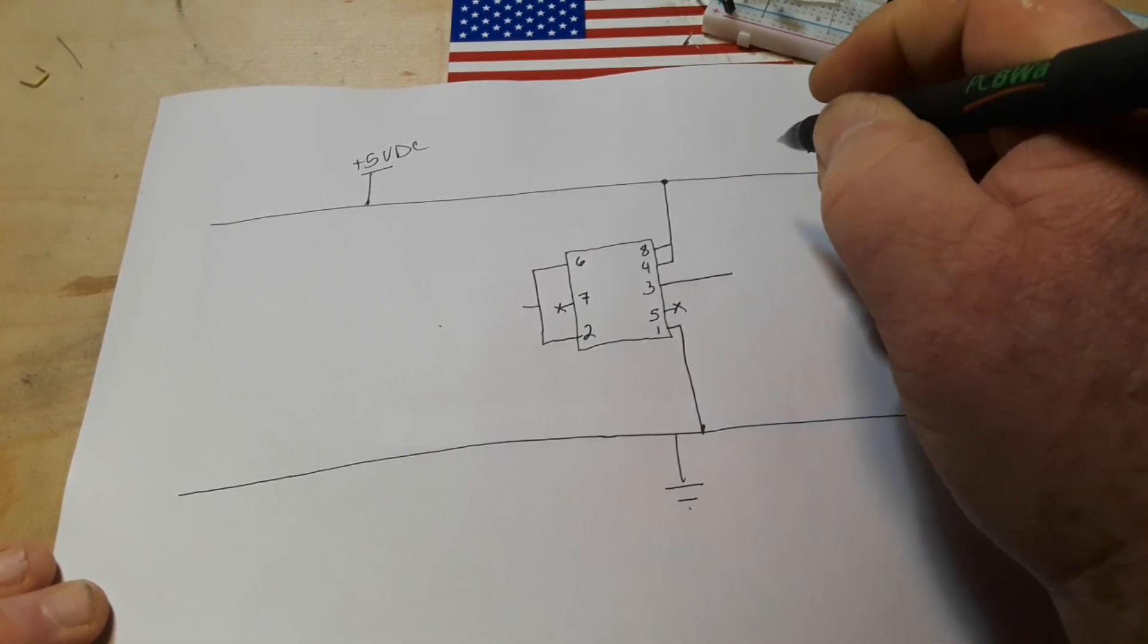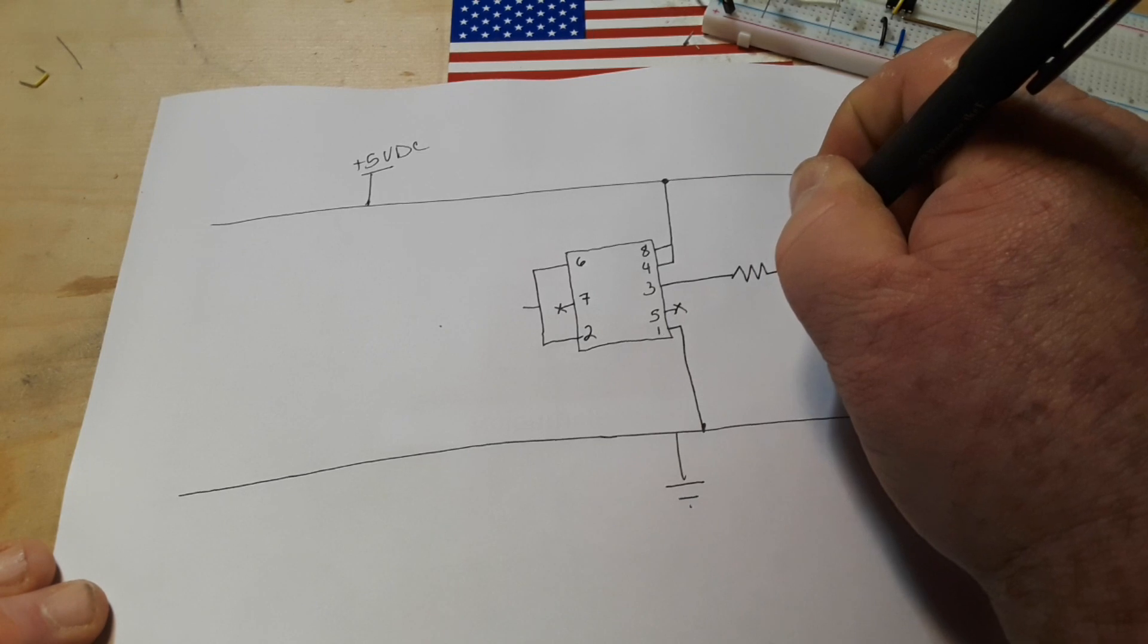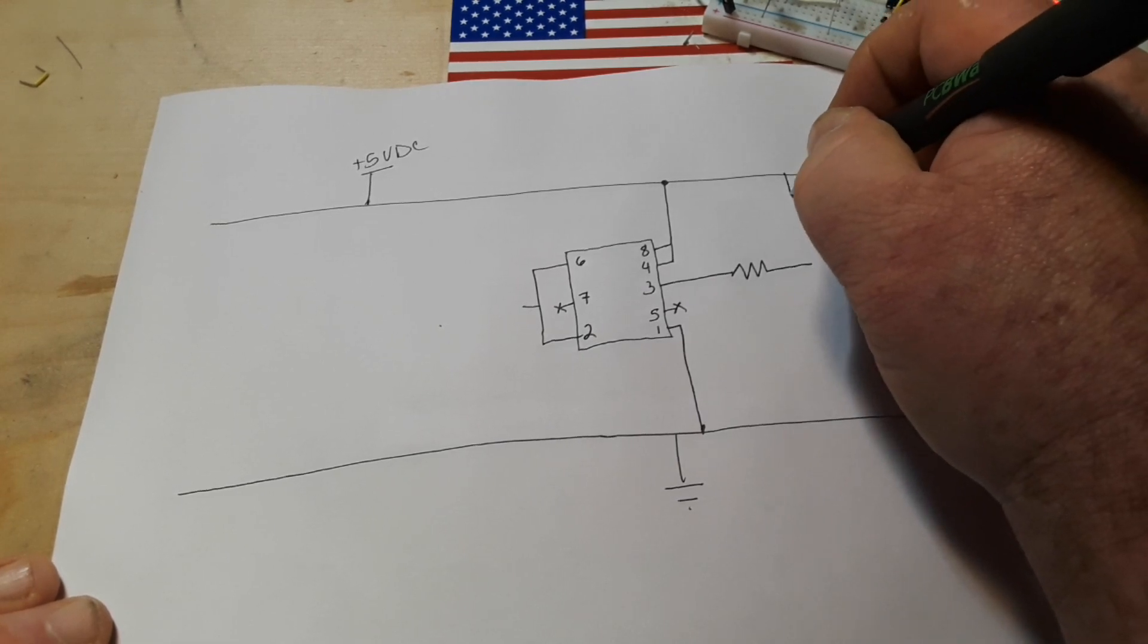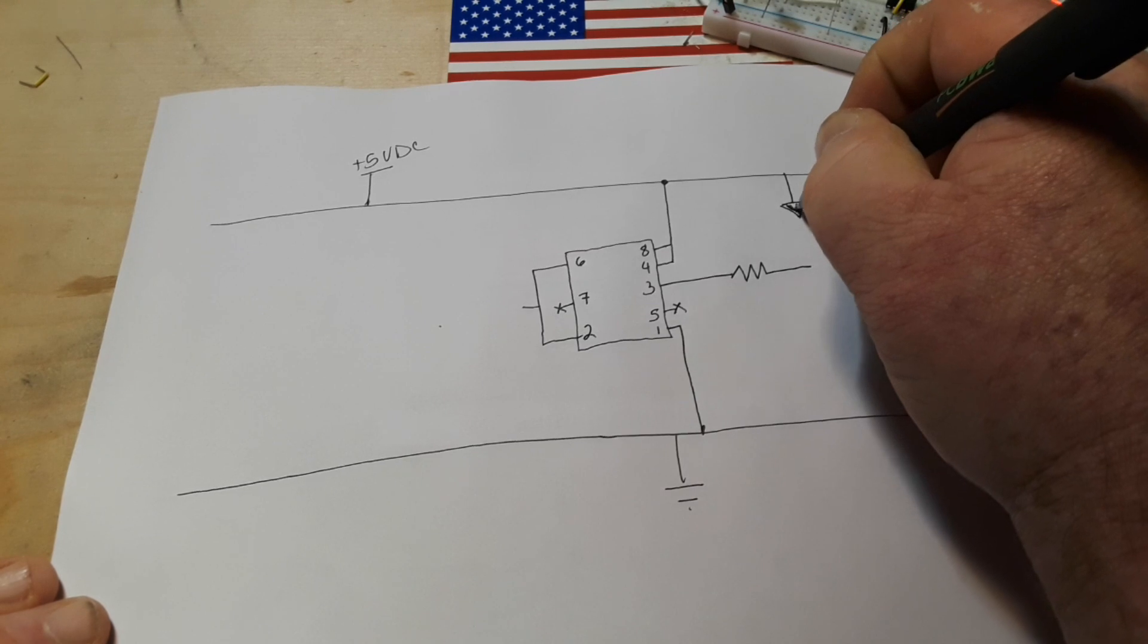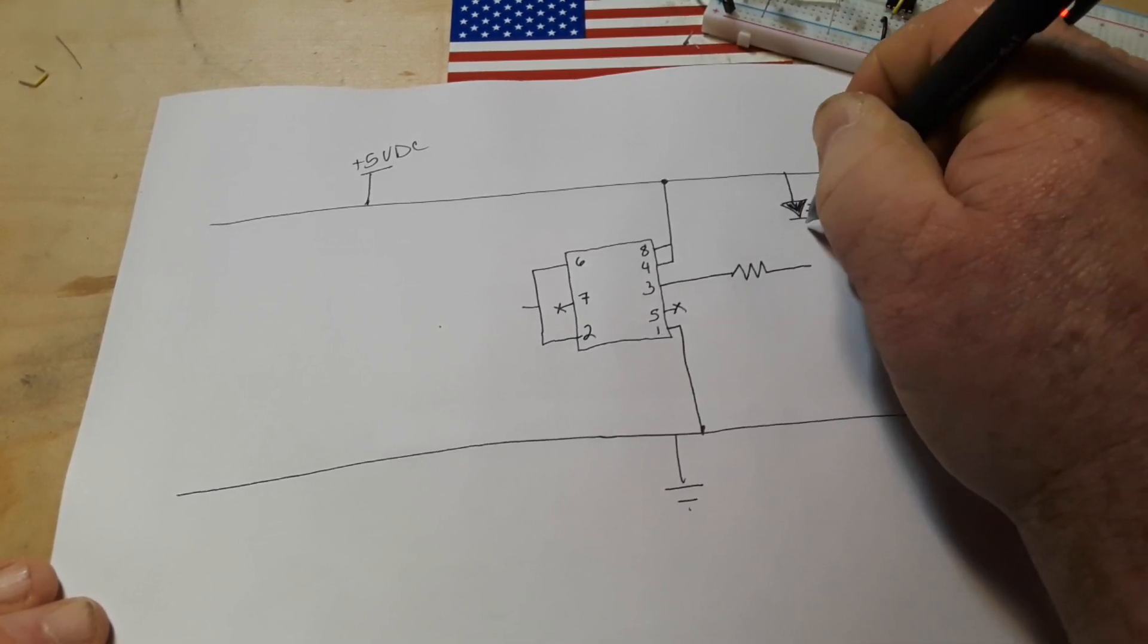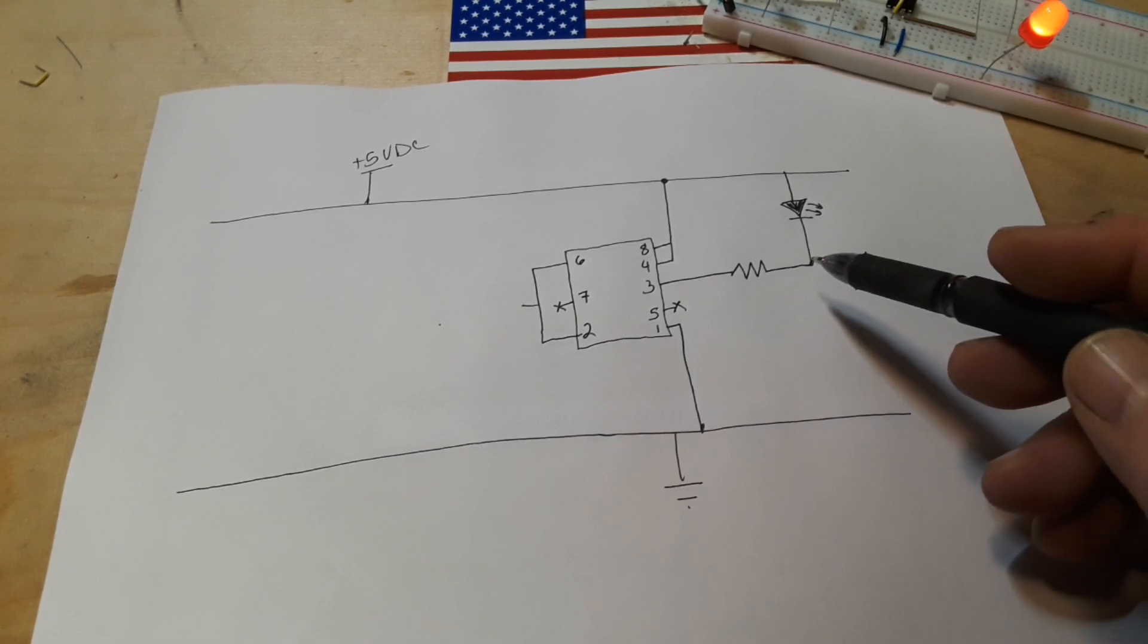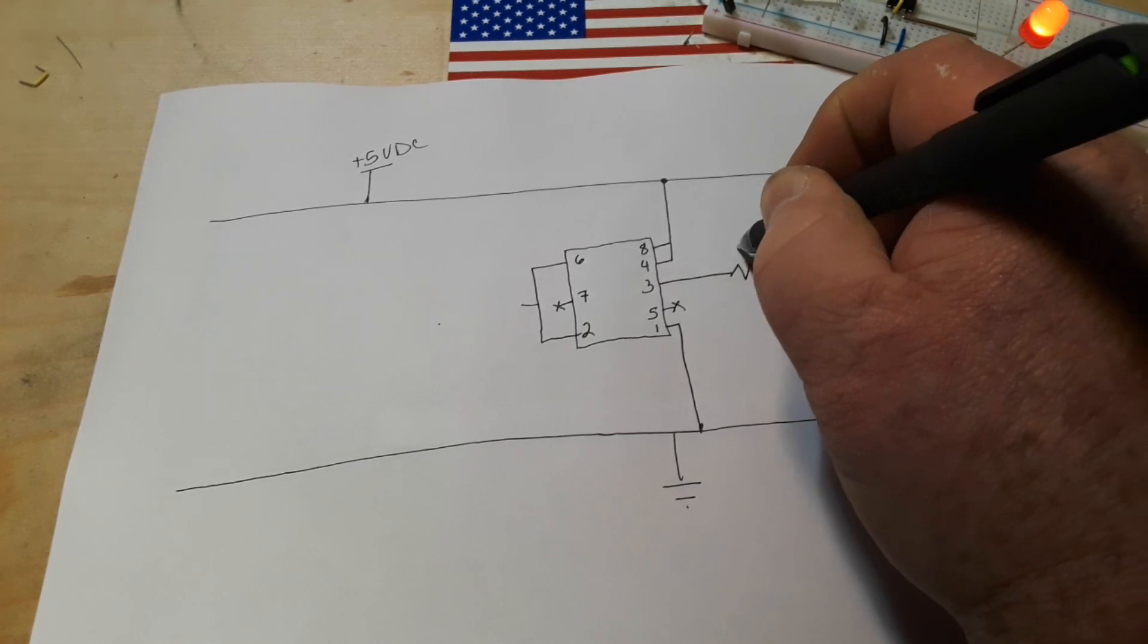...in this case we're sending it to a resistor and then we have a diode. In this case it's an LED. You could easily substitute a transistor here or a relay, whatever you want. We simply use the LED just to show what's going on.